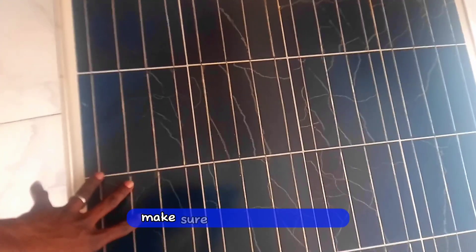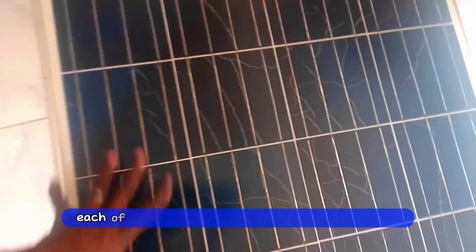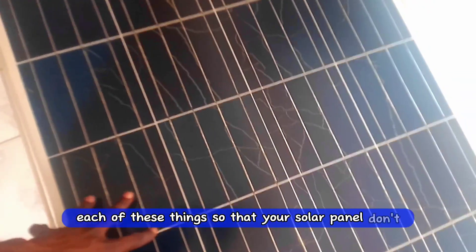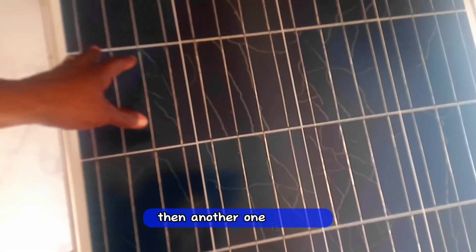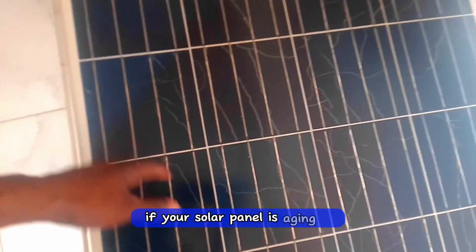So whenever you install your solar panel, make sure you are conscious of each of these things so that your solar panel doesn't deteriorate. Then another one is aging - if your solar panel is aging, it will start degrading like this.